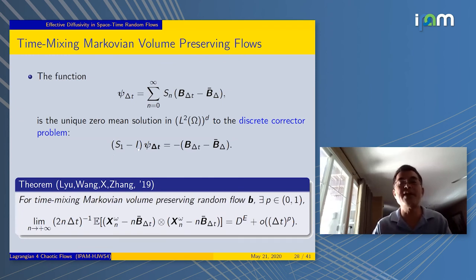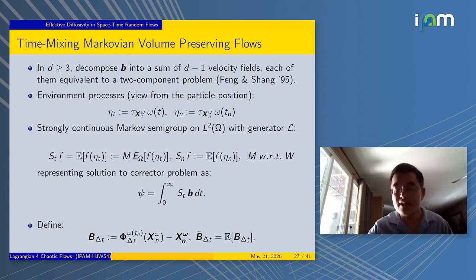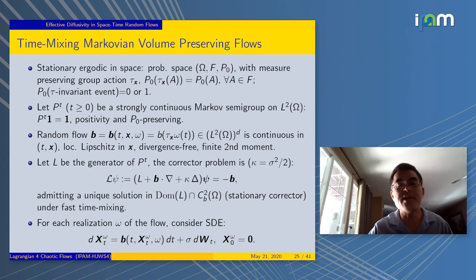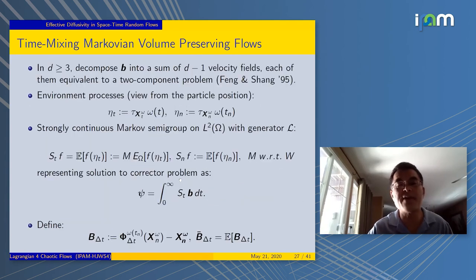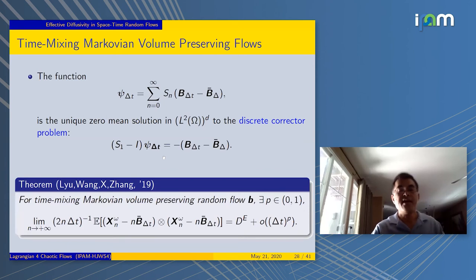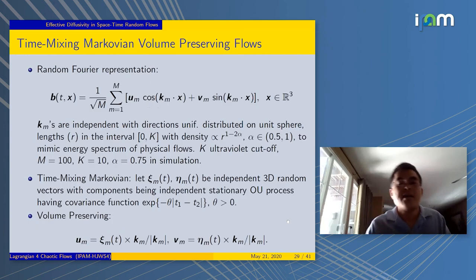It's S_1 minus identity φ_δt with a delta b on the right-hand side. Let's flash back. We can see that this is really just some discrete version of the corrector problem we have there. The result is that if you look at the mean square displacement, the discrete-type version, as n goes to infinity, you're going to recover the effective diffusivity up to some order between zero and one.